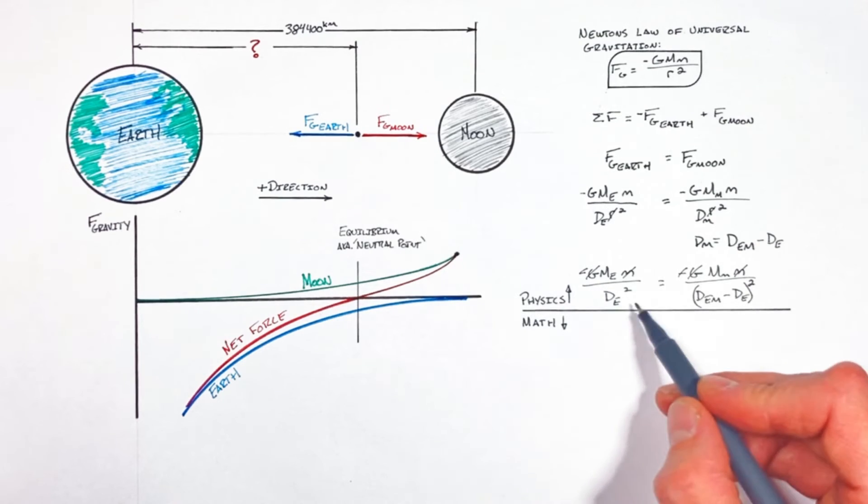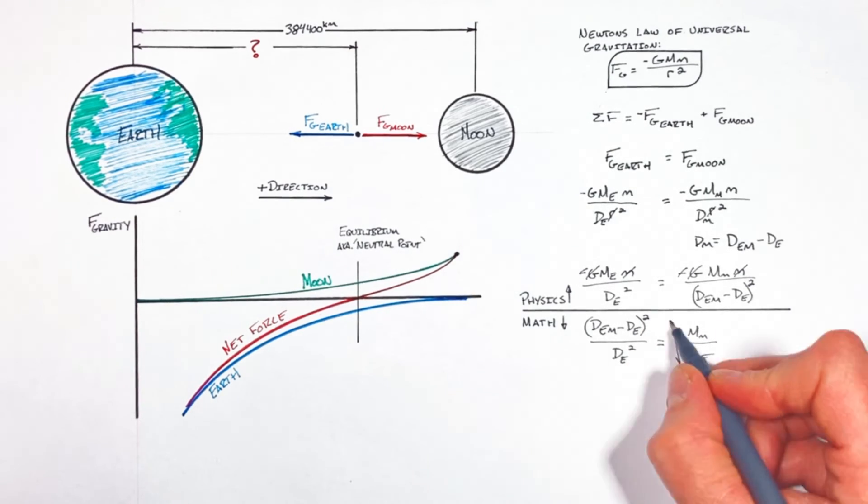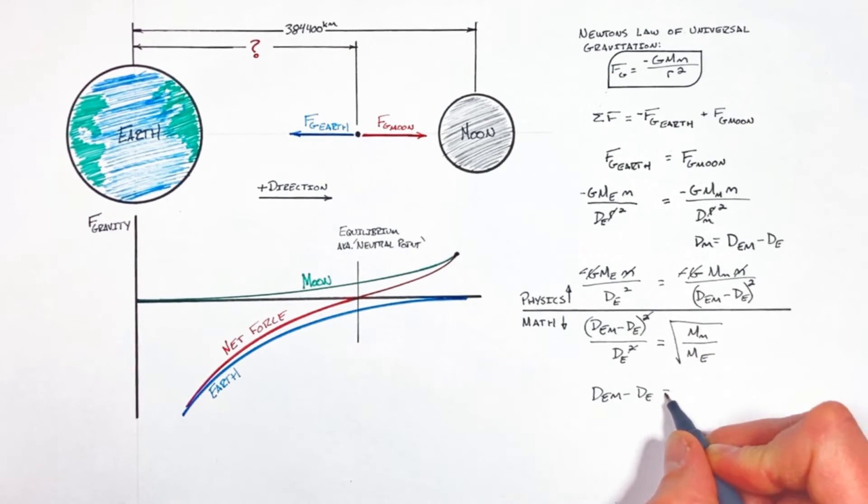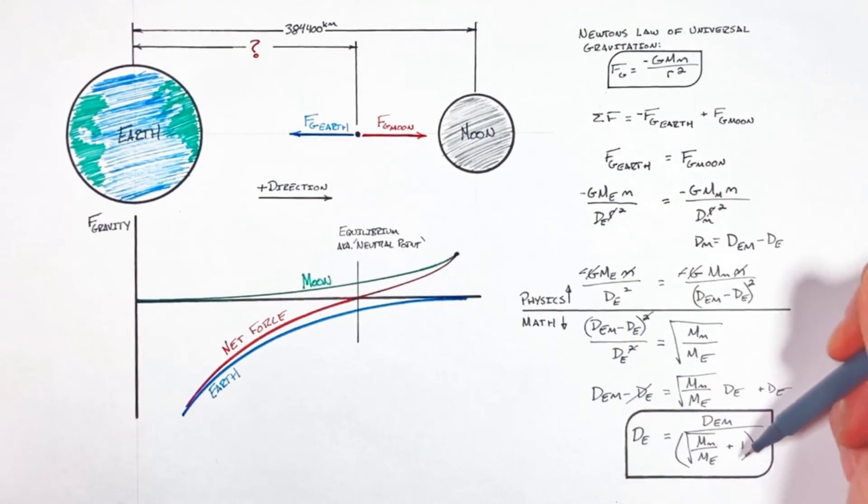Now we're trying to solve for de, and the easiest way to do that is to pull this term over here and put all our masses on the other side of the equal sign. Then taking the square root of both sides, we can isolate de, leaving us with this expression.